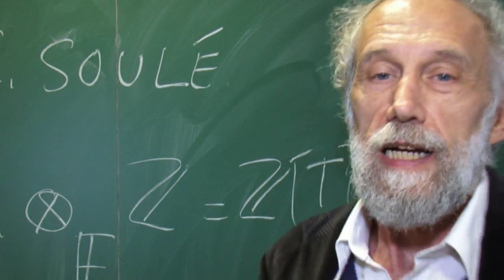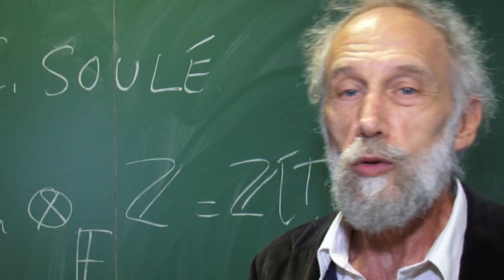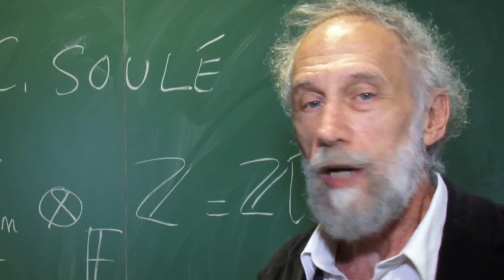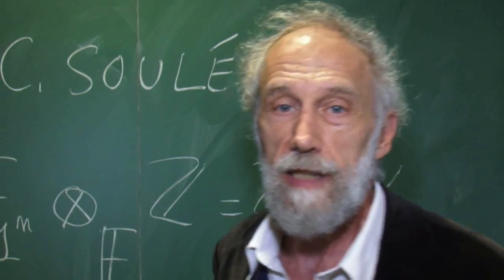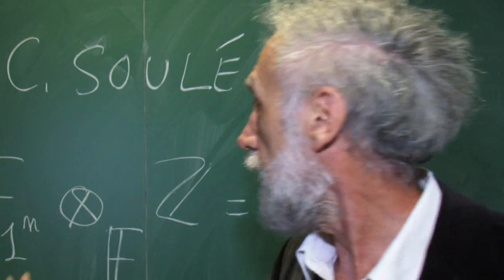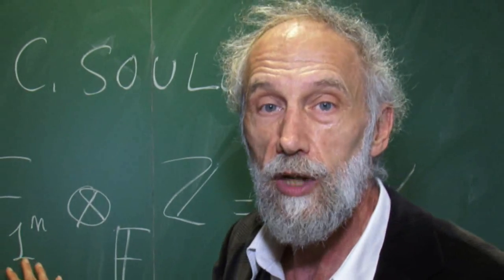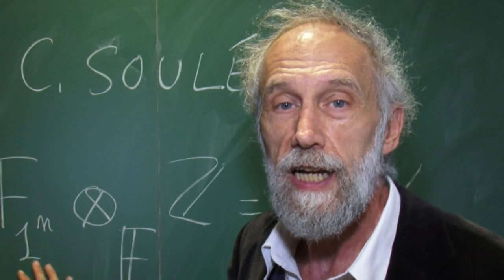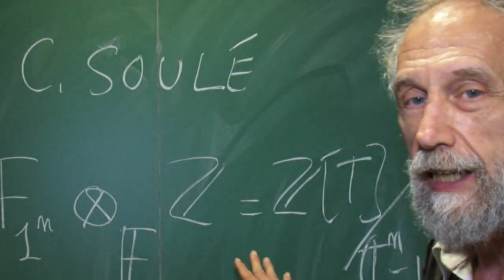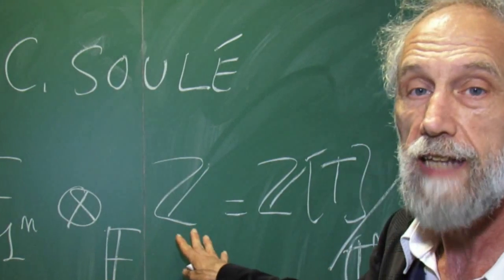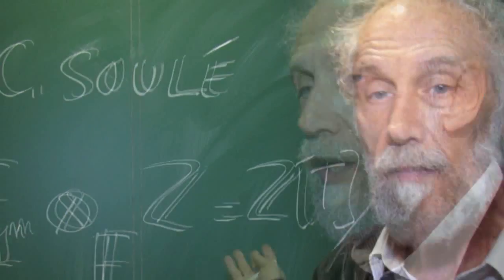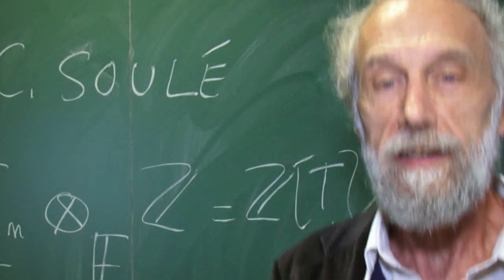Even without knowing what F1 is, one can do a base change with respect to natural extensions — analogous to a finite field Fq as an extension of F1. There is a similar story for F1, and if you do the base change to any ring, like Z, you obtain exactly the group ring of the group Q mod Z.